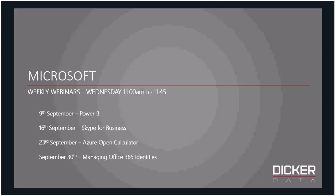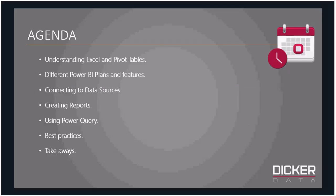We're back on our weekly webinar schedule. Today we're going to be talking about Power BI. Next week on the 16th we'll be looking at Skype for Business. The 23rd we'll spend time on the Azure Open Calculator — how to calculate pricing under Open. September 30th we'll be managing Office 365 identities, covering things like federated identities.